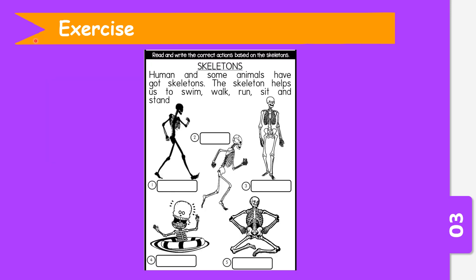For today's homework, we are going to read and write the current actions based on the skeleton. Skeletons: Humans and some animals have got skeletons. The skeleton helps us to swing, walk, run, sit, or stand. Based on the first picture, what do you think the skeleton helped us to do? You can choose your answer from here: swing, walk, run, sit, or stand. The answer is walk. For question number two to question number five, I'll leave it up to you to complete the task.